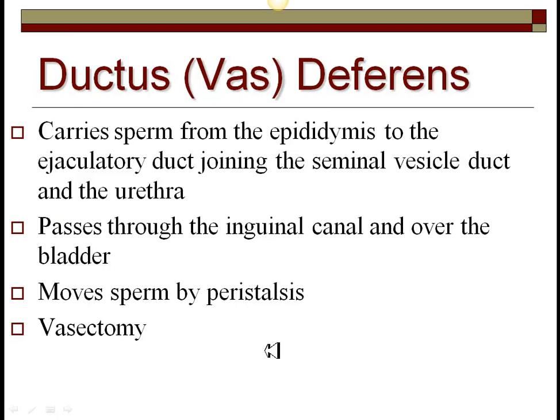For the function of the vas deferens, you simply need to know it's the tube that carries sperm to the ejaculatory duct. It joins there with the duct from the seminal vesicle, and at that point — all happening in the prostate gland — you call that the urethra from there on. The urethra in a male is responsible for delivery of both sperm and urine. It takes that strange pathway passing through the inguinal canal because the testicles are actually abdominal organs.